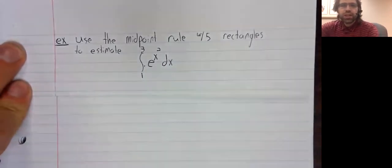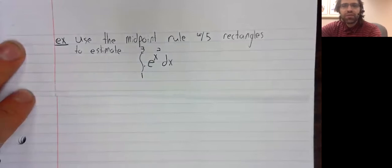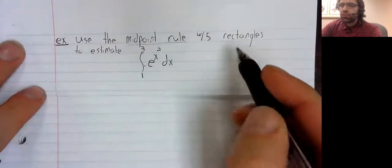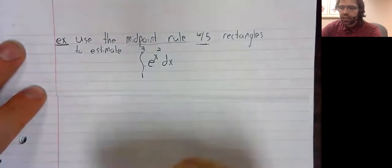We cannot take the antiderivative using any of the techniques we know. So we have no choice but to estimate it if we want it. And I'm telling you to use the midpoint rule and five rectangles.